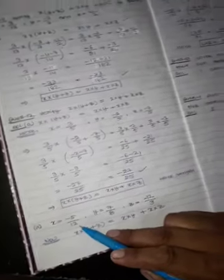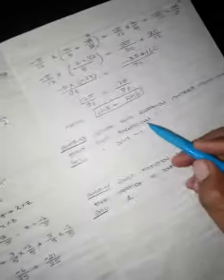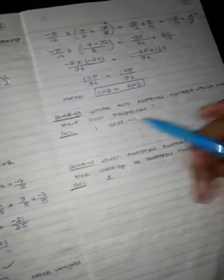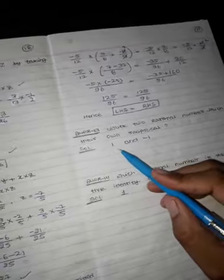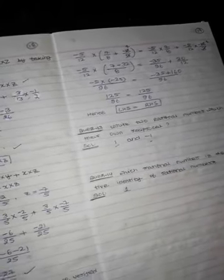Same for question number B. Question number 13 says: write two rational numbers which are their own reciprocals. So we have to give two numbers like that. We have: one number is 1, the second is minus 1.